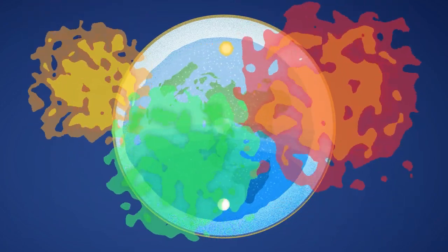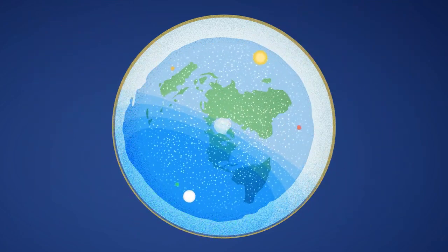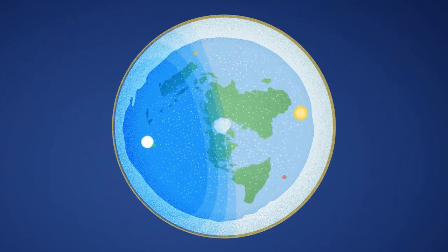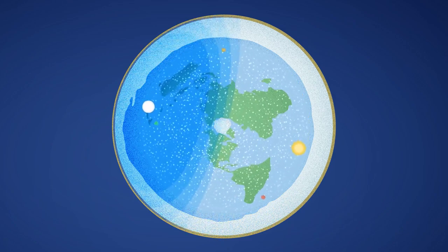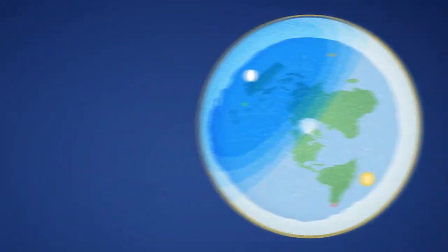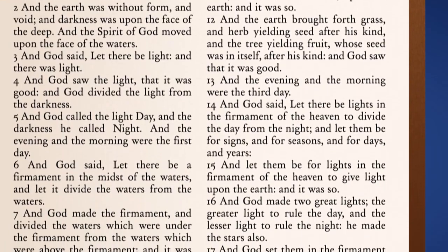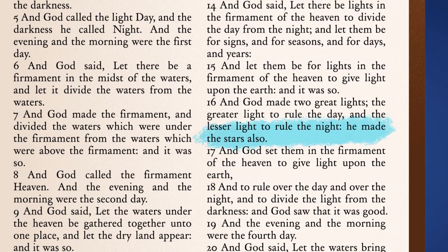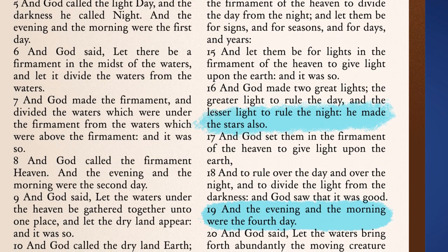What are called planets are simply wandering stars. These luminaries traverse the heavens irregularly, wandering in retrograde motions above the earth. Not being mentioned specifically during Creation Week, the wandering stars fall under the general category of stars, which God made on the fourth day.